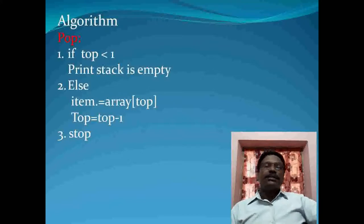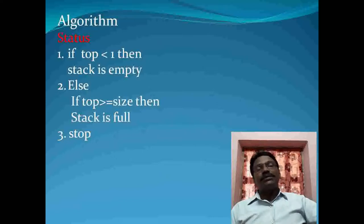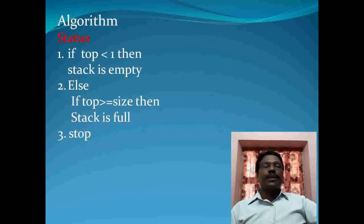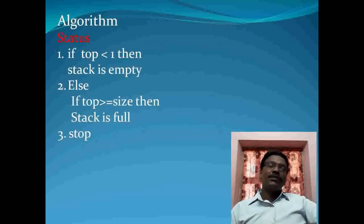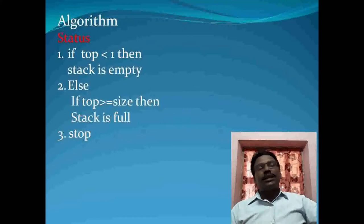The third algorithm is for status, which has two conditions. One is stack is empty, and the other is stack is full. If top is less than zero, then the stack is empty. Otherwise, if top is greater than or equal to size — for example, if size is 5 and you have stored 5 values — then the stack is full. Those are the two conditions of the status algorithm.